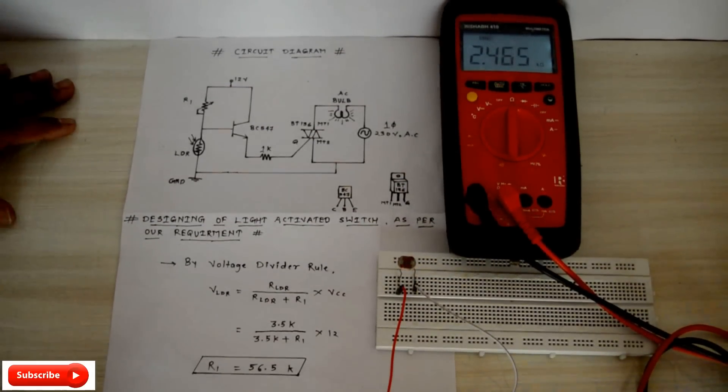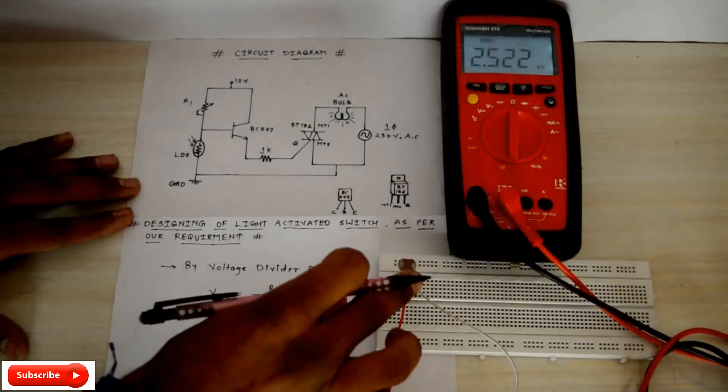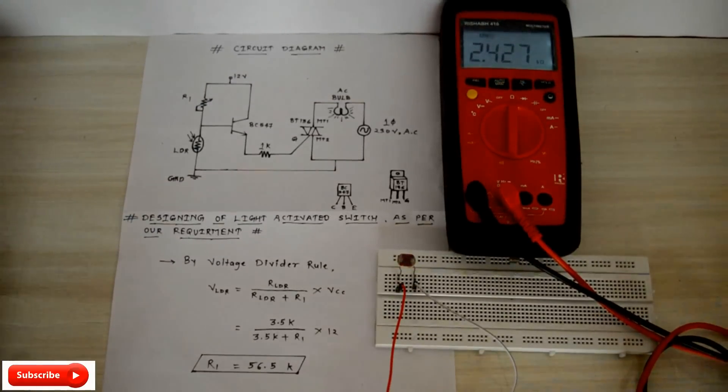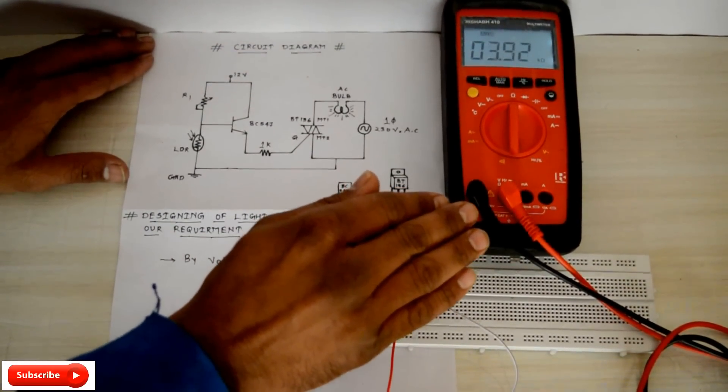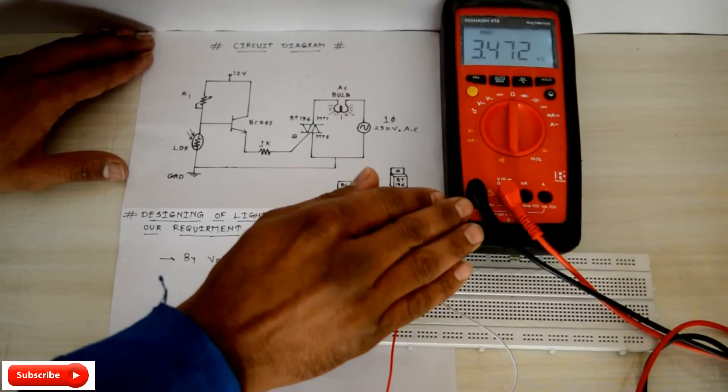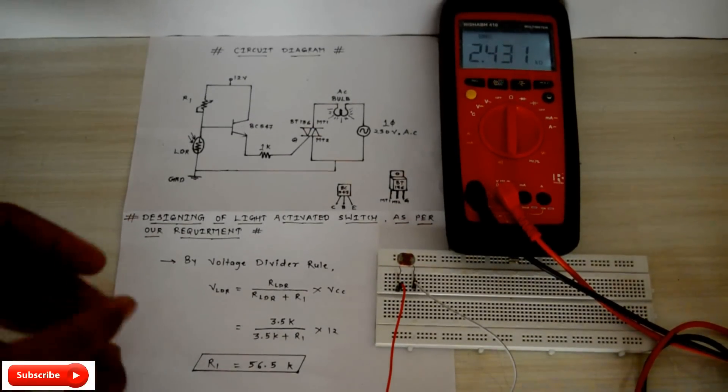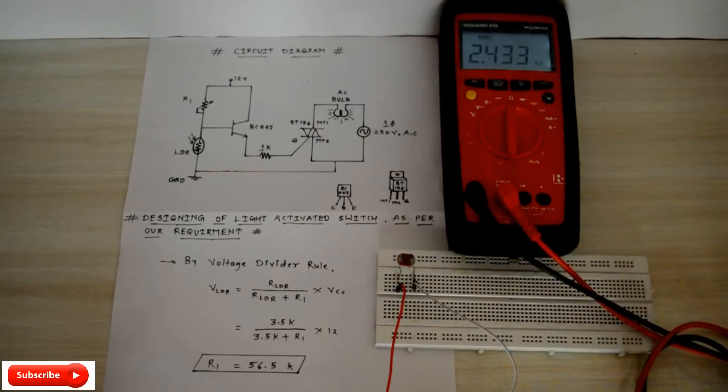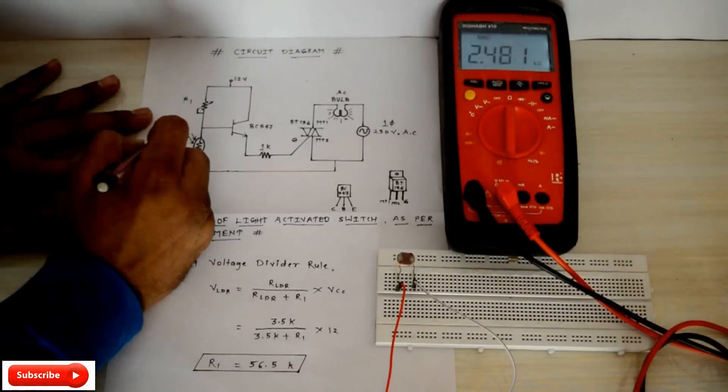So friends, the latest design of this circuit as per our requirements means measure the resistance of LDR in sufficient darkness. Suppose I measure it is 3.5K. This means when the resistance of LDR goes about 3.5K, then and then only the transistor can turn on. So put 3.5K in front of LDR and measure the resistance R1 by the voltage divider formula.